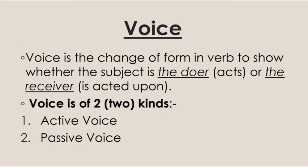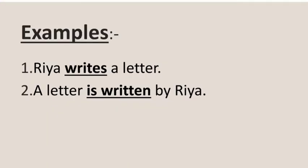Now, there are two kinds of voice: active voice and passive voice. In the first example, Riya writes a letter — Riya is the subject who is doing the action directly. So, when the subject of the verb does something itself in a given sentence, the verb is said to be in the active voice.